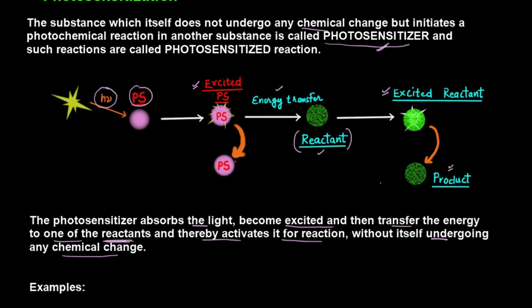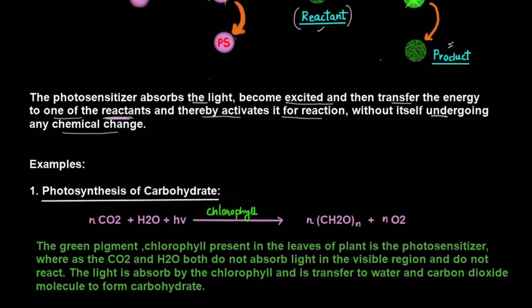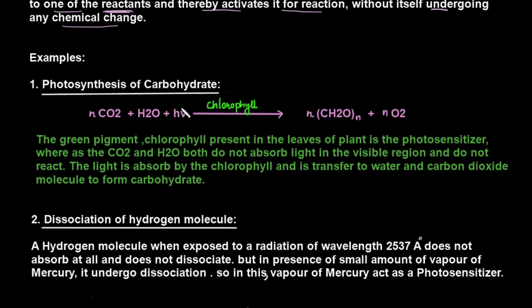Let's discuss some examples of this photosensitization reaction. The best example is from nature, that is photosynthesis of carbohydrate. In photosynthesis, leaves undergo this process. Normally carbon dioxide or water molecules cannot absorb light themselves, but green leaves contain a pigment known as chlorophyll.